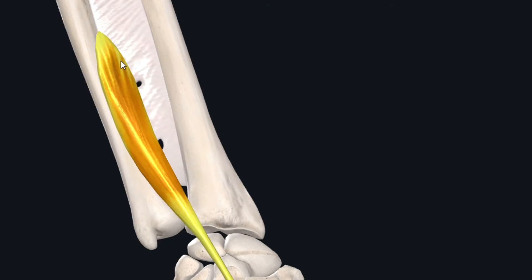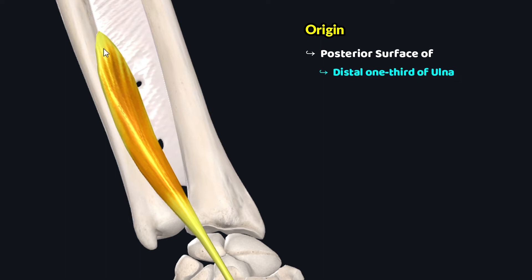This muscle has its origin from the posterior surface of the distal one-third of the ulna and the adjacent interosseous membrane of the forearm.